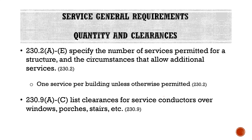Section 230.9A through C lists clearances for service conductors over windows, porches, stairs, and similar features — basically any type of dwelling or property you can imagine. When we're talking about overhead service conductors, this gives you how far away from that type of item or structure those conductors have to be.